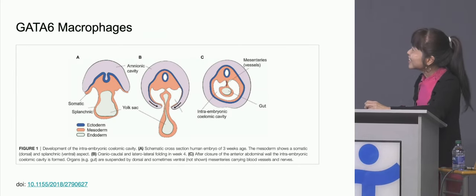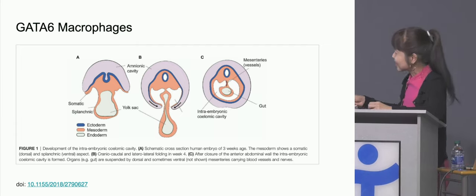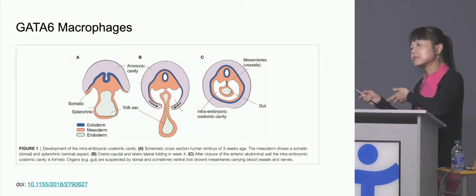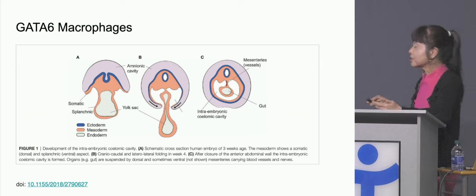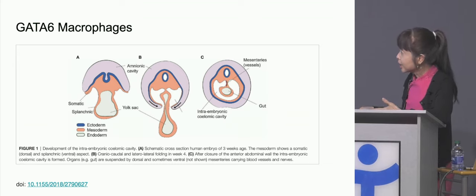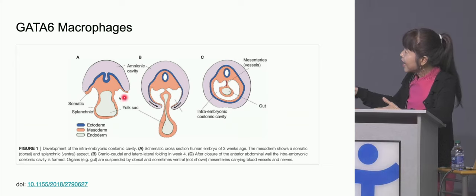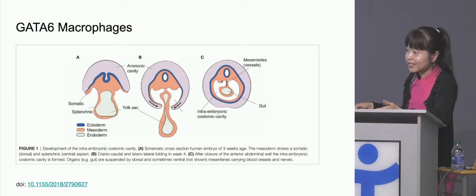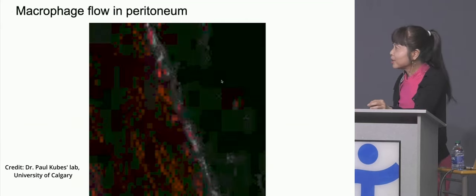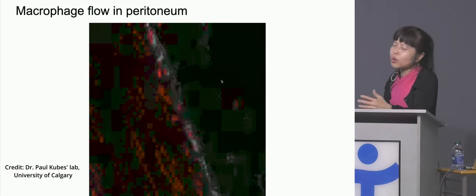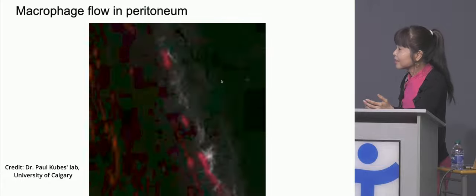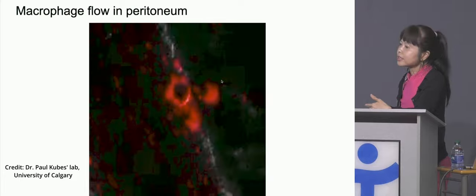My latest crush: the GATA6 macrophages — also known as cavity-associated macrophages. We have different cavities in our body: the pericardial cavity around the heart, the pleural cavity around the lungs, and the peritoneal cavity around the abdominal organs. The developing embryo closes up to form this peritoneal cavity, and we find that there are macrophages even in cavities. Generally, people in immunology think macrophages don't move very quickly — they're very boring, they hardly move at all. Let's see if that's true.